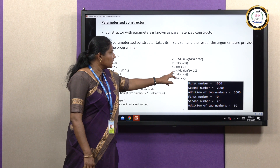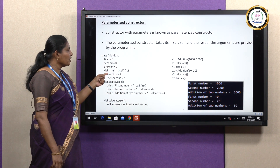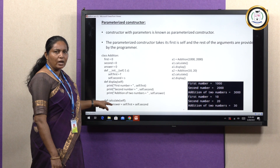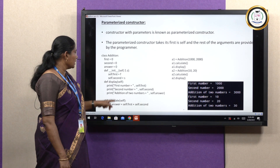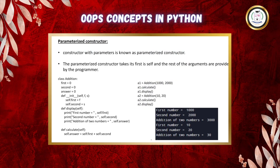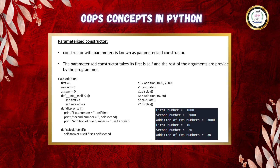We created another object A2 with two parameters 10 and 20. The __init__ function is called automatically, assigning 10 to f and 20 to s. We add the two values together and the answer 30 is stored. First number is 10, second number is 20, addition of two numbers is 30. In summary, the default constructor cannot accept any values, but the parameterized constructor accepts one or more parameters.